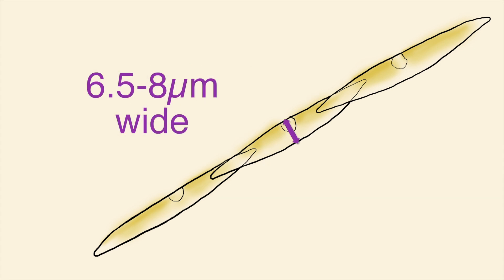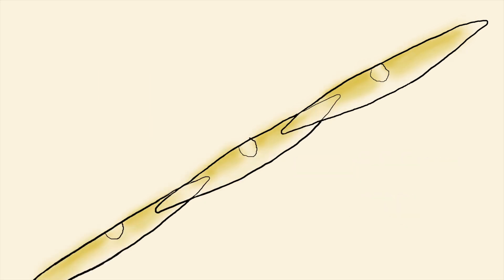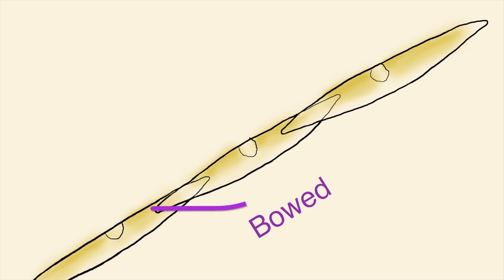This cell type is 6.5 to 8 micrometers wide, 75 to 144 micrometers long, and cells have one side that is generally straight while the other is bowed or bent.